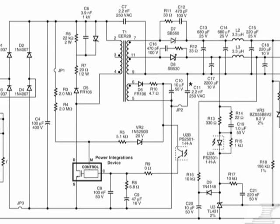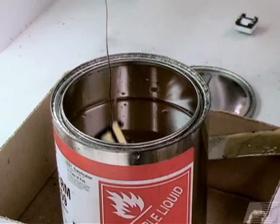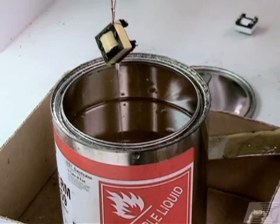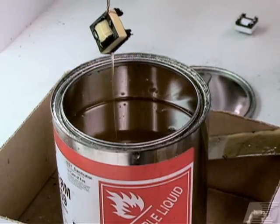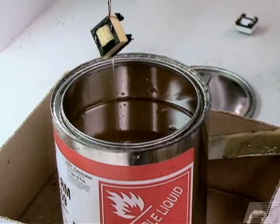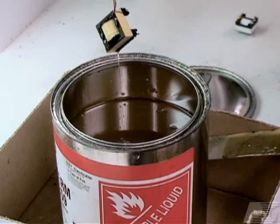If the snubbers don't affect the initial current spike, measure the transformer primary capacitance. If the transformer capacitance is high, verify it was dip varnished and not vacuum impregnated. Varnishing a transformer with vacuum impregnation can significantly increase its primary winding capacitance.